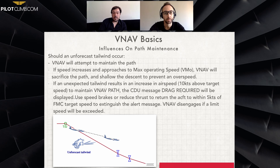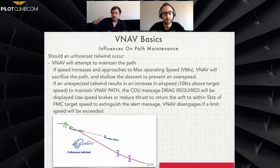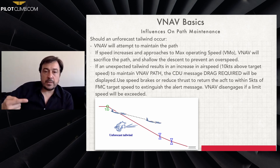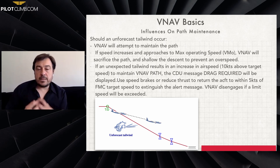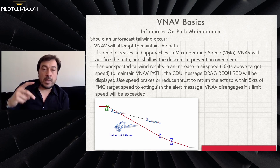If an unforecast tailwind occurs, the VNAV will attempt to maintain the path. If speed increases — because the tailwind is pushing us — and approaches maximum operating speed VMO, the VNAV will sacrifice the path and shallow the descent to prevent overspeed. If it continued diving the aircraft into the VNAV path it would increase speed more and more until reaching VMO or MMO. So to protect us, the VNAV shallows the descent profile to maintain speed within limits.